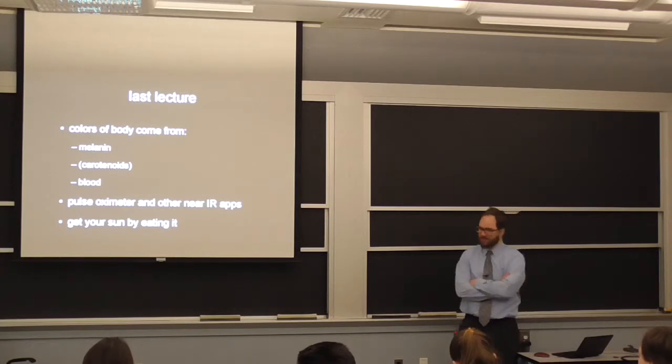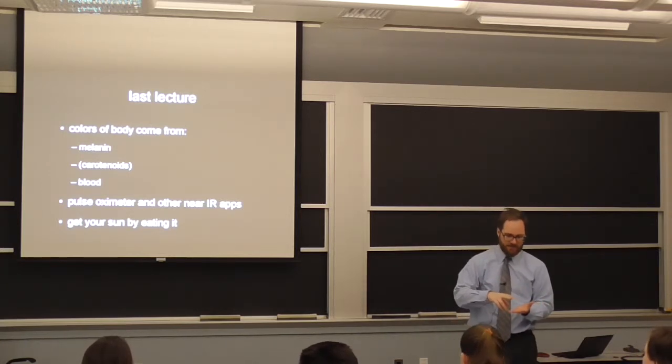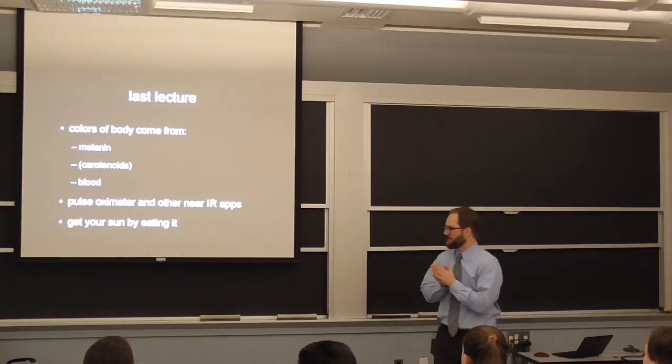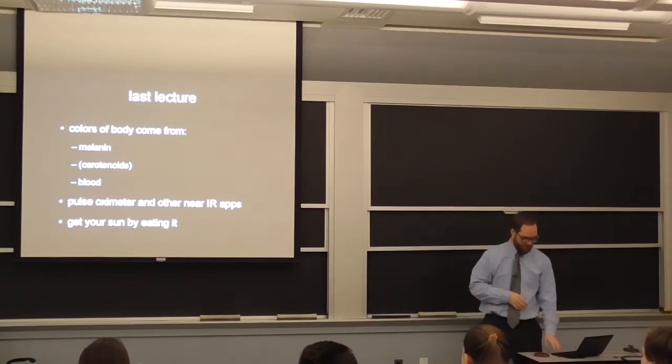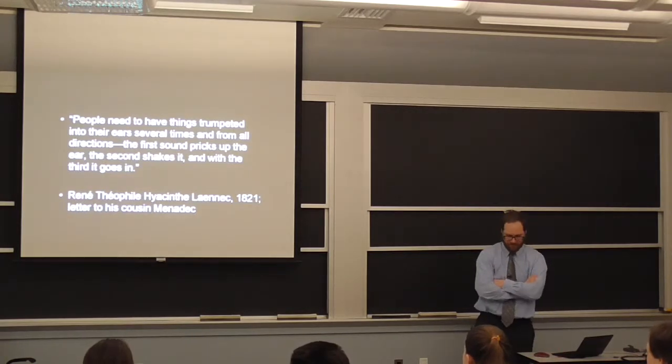Last time we talked about the colors of the body, mostly comes from melanin, blood, and some carotenoids. We talked about some of the apps that you can use that are based off the sun. So go eat the sun instead of being hit by sun. So we're going to talk about sound.